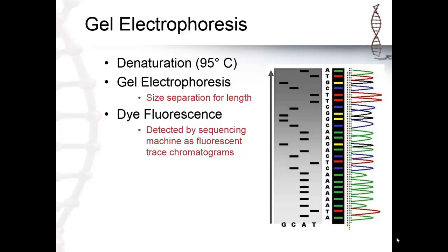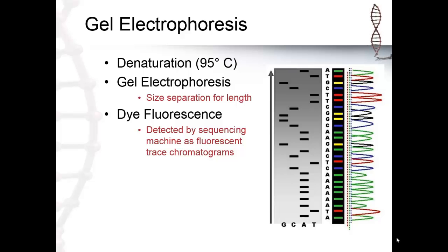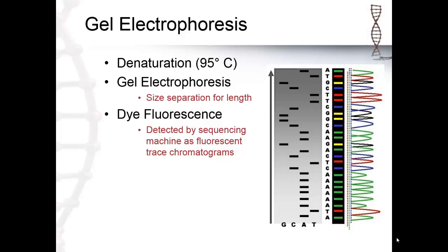With this method, it is very time consuming and labor intensive. It is also only able to output short sequences at a time, and only one at a time as well. Therefore, faster multi-parallel sequencing has since been developed and named next-generational sequencing. These new methods are discussed in the next videos.